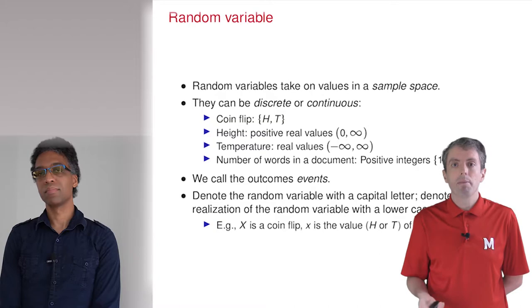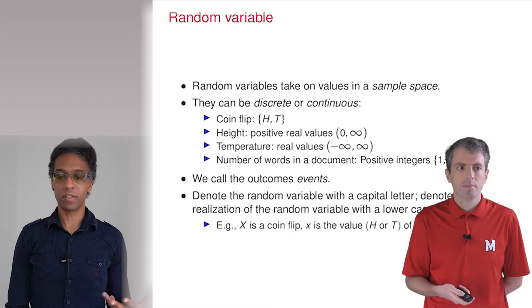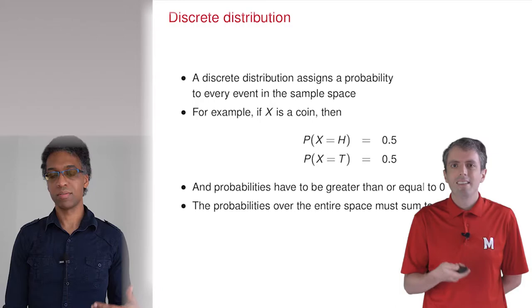In everyday language, a probability is a chance that something might happen. A probability function takes an input and says how likely that event is. But there's a limited set of things that are possible, right? So all the events need to sum to one.